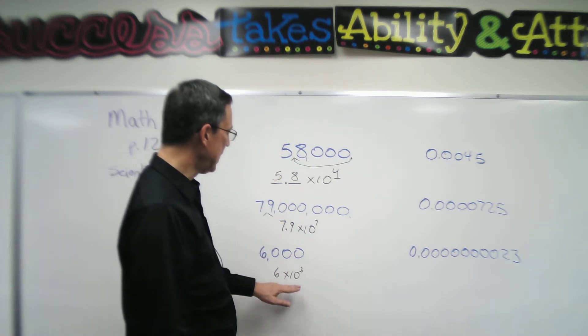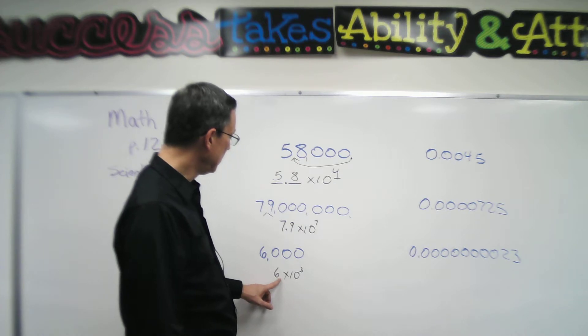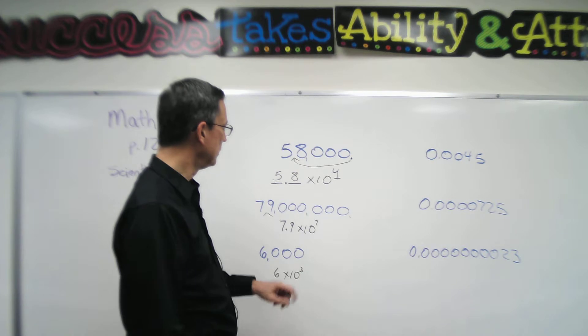Now we could go backwards the other way. If they gave us six times 10 to the third, then I would start with the decimal here and move it one, two, three places and fill in with zeros.